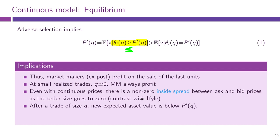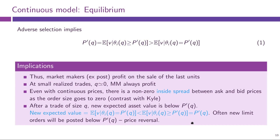The final observation is that because the marginal price of the last asset is always above the market valuation, after a trade of any size Q the new expected asset value will be below the marginal price of Q. So this marginal price is not informationally efficient — it always overstates market valuation on the ask side and understates it on the bid side.